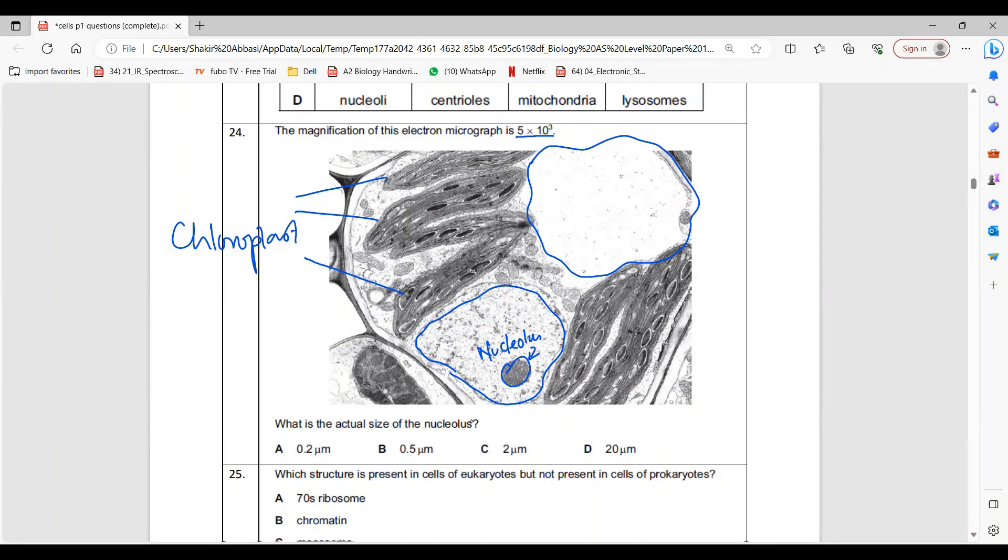How do you find actual size? The magnification is given. The formula is m equals i over a, so obviously actual will be i over m. Image size you'll have to measure. For example, I assume this is 1.5 centimeters, which is 15 millimeters or 15 times 10 to the power 3 micrometers. So actual equals image 15 times 10 to the power 3 over magnification 5 times 10 to the power 3.